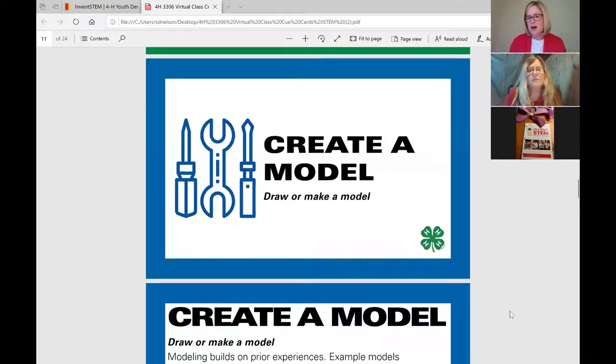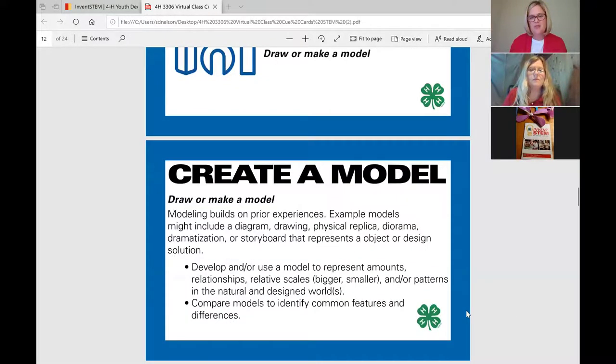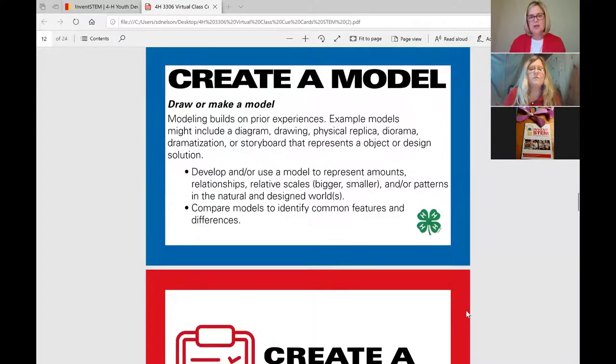Then we have create a model, another good STEM and engineering process skill. And here these models can be kind of flat or two dimensional where you're drawing or that type of thing. Or they can also be three dimensional. So if I look here, here's some examples of models that can be done drawings, diagrams, making something physically, dioramas, those types of things. These are all great ways to do models.